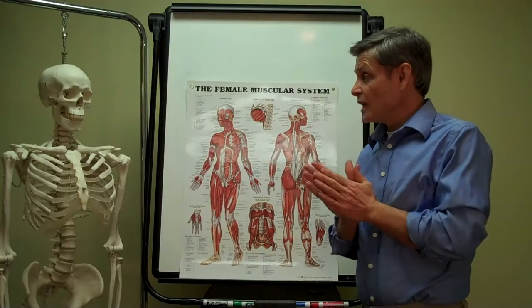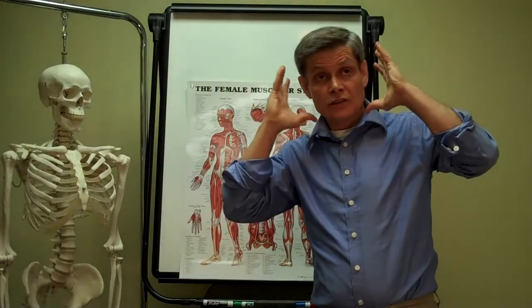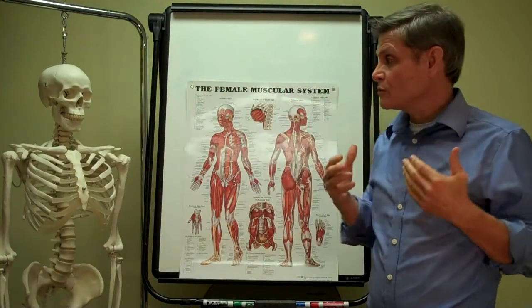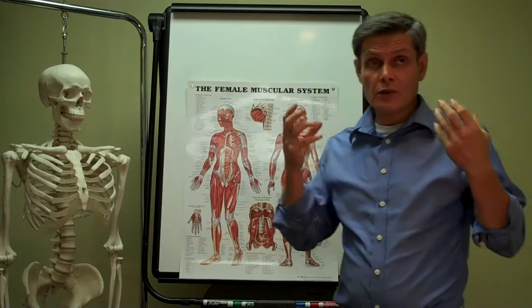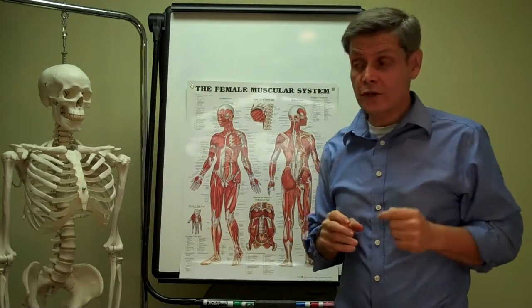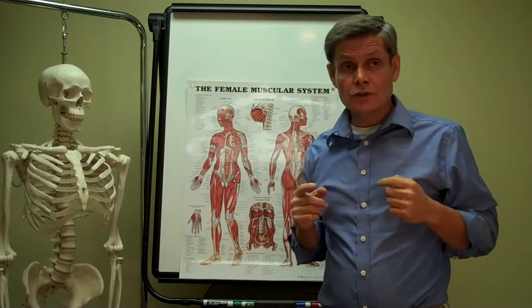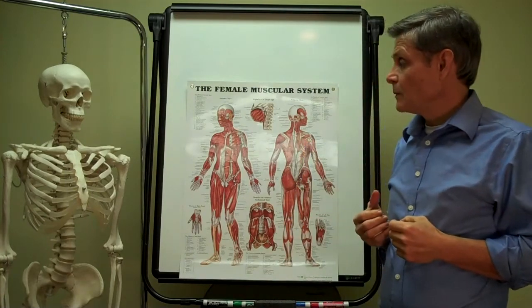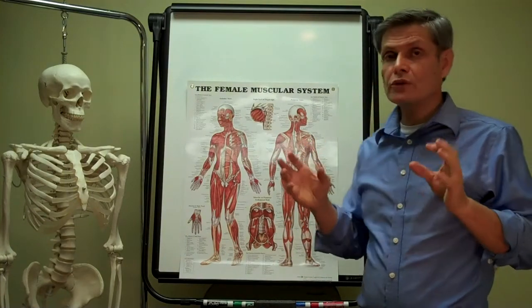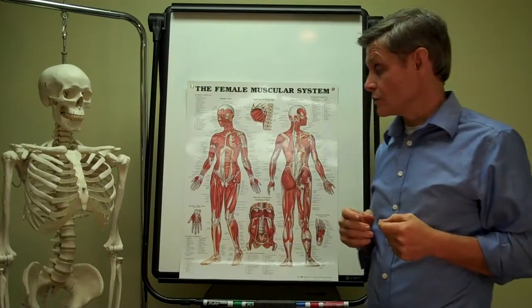The muscles of the head, neck, and trunk include many muscles that attach to the head. Of these muscles, the ones we pay the closest attention to are the muscles that operate the jaw. If you saw the previous video, you know we talked about the temporomandibular joint, which is often very painful and requires attention. So in the muscular system, we learn the muscles that operate that joint so that you can learn how to treat those muscles.